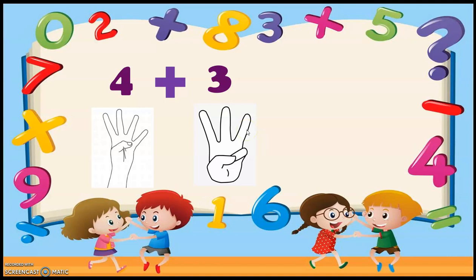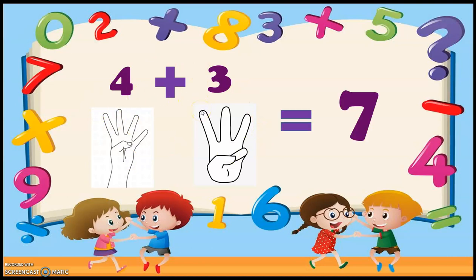Now we have to sum the fingers. Count them: one, two, three, four, five, six, seven — I have total seven fingers. Note: only count the fingers you have taken out, not the folded ones. So my answer is seven. In this way we can count on our fingertips.